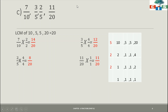Next fraction is 2/5. Again I multiply 5 by 4 to get 20. Since I am multiplying the denominator by 4, I have to multiply the numerator also by 4. So 2 × 4 = 8 and 5 × 4 = 20 — we get 8/20. Last fraction is 11/20 — since the denominator is already 20, which is equal to the LCM, we keep it as it is. Now we have 14/20, 12/20, 8/20, and 11/20 — we have converted the unlike fractions into like fractions with the same denominator.